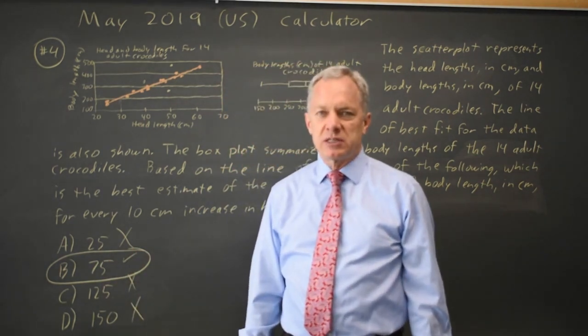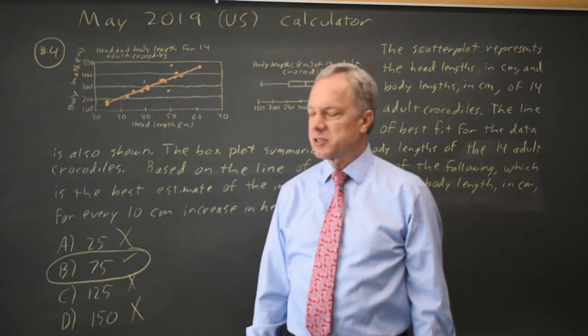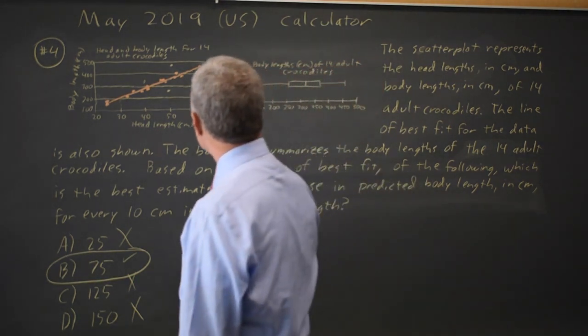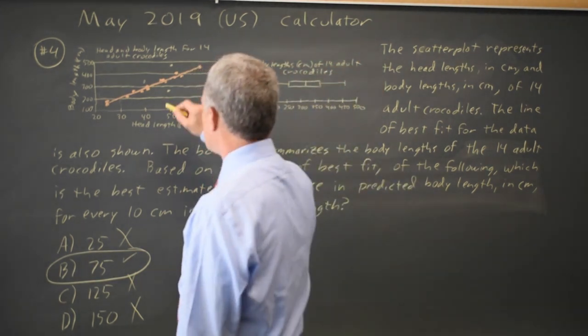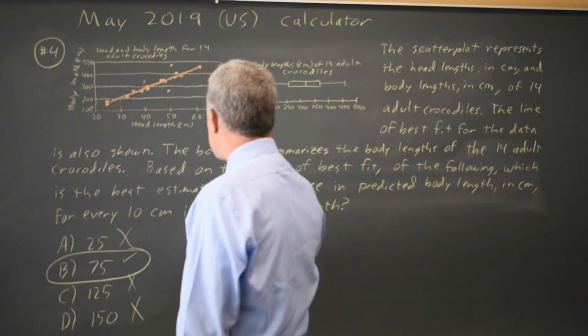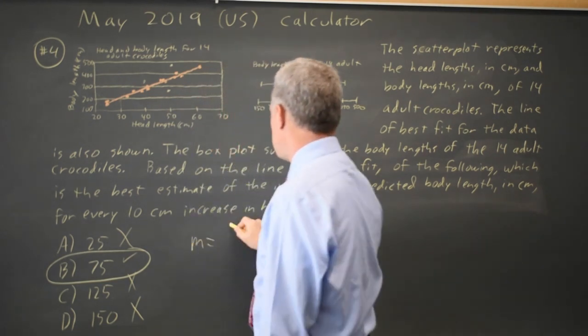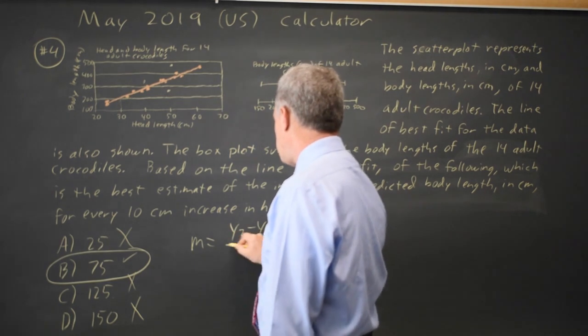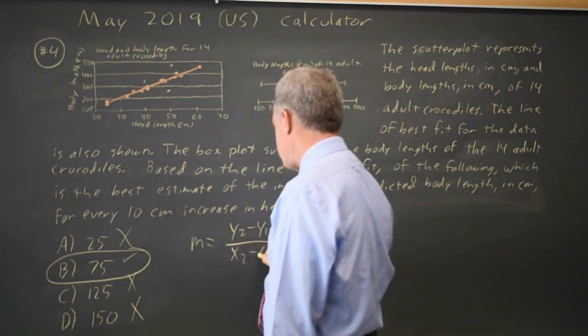Very often you can do this just by substituting in the answer choices. Alternatively, we could find the slope and then multiply that slope by 10. So slope is the change in Y, Y2 minus Y1, over the change in X, X2 minus X1.